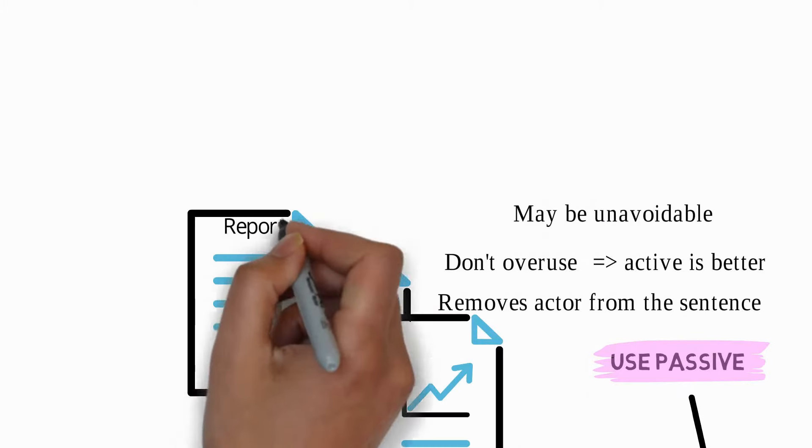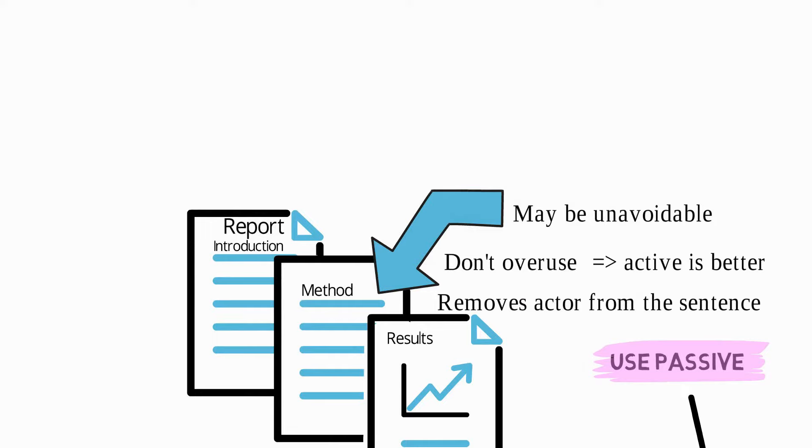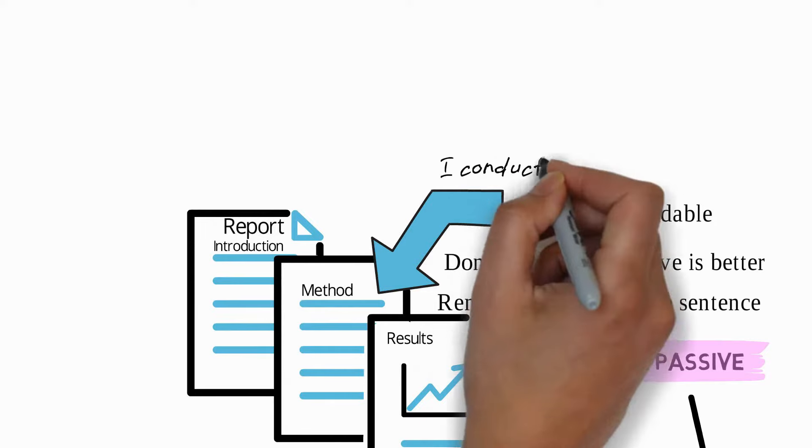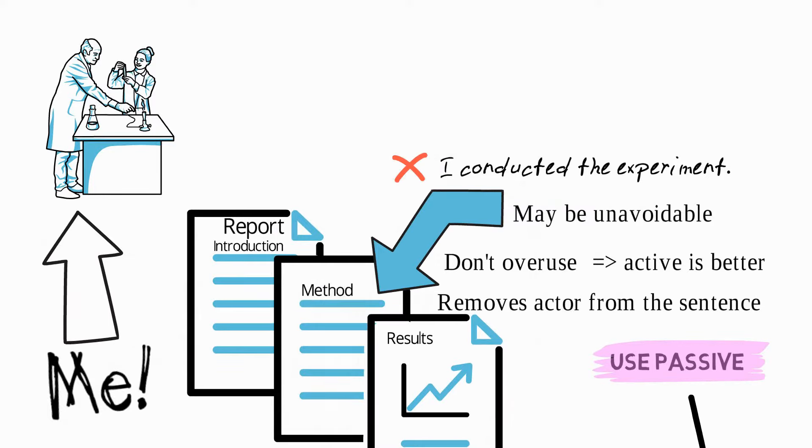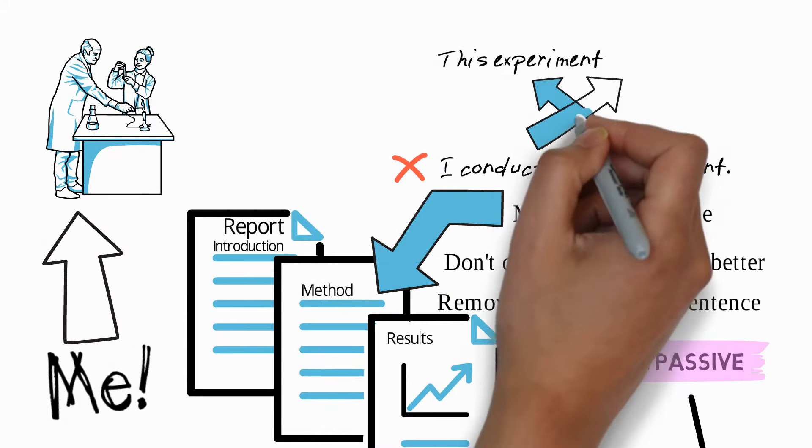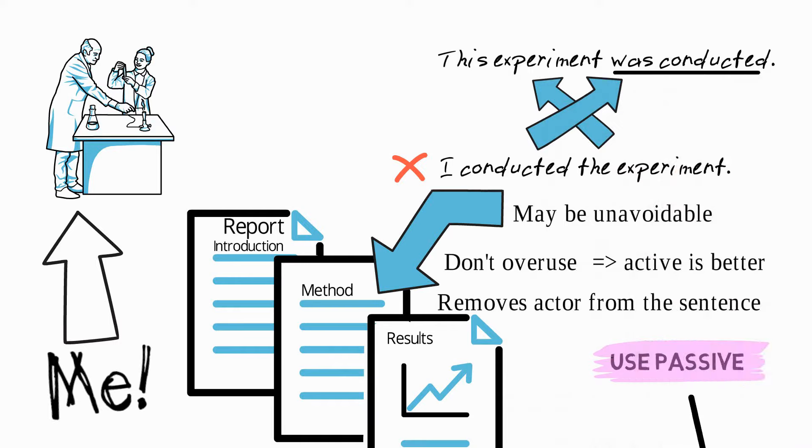For example, if you're writing the method of a report, you'll normally need to use passive in order to avoid first person pronouns. For example, rather than I conducted the experiment, we can make the experiment the subject: the experiment was conducted, and that uses passive.